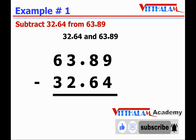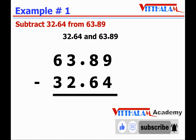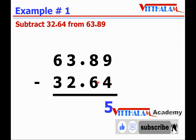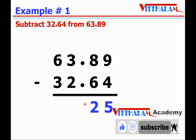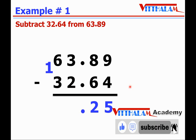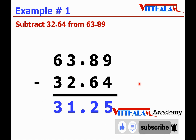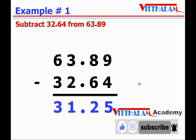Next, we will subtract the decimal numbers right to left. First, 9 minus 4 is 5. Then 8 minus 6 is 2. Then step 4: put the decimal point. Then 3 minus 2 is 1, and 6 minus 3 is 3. So the required difference is 31.25.